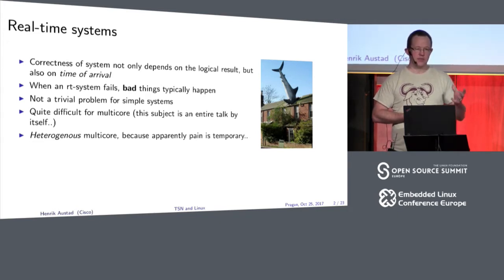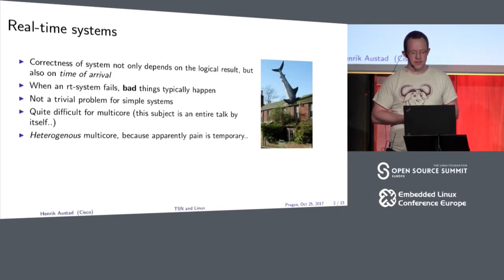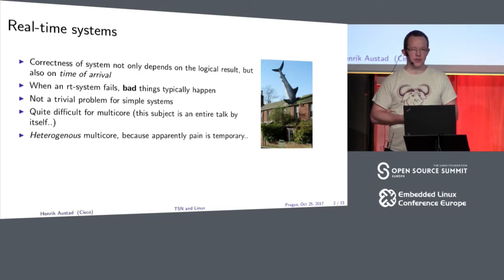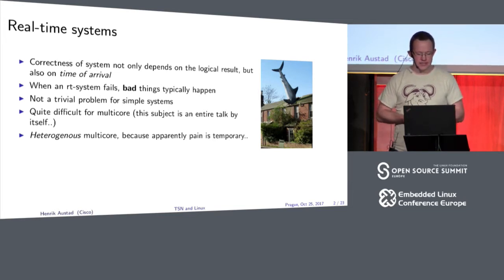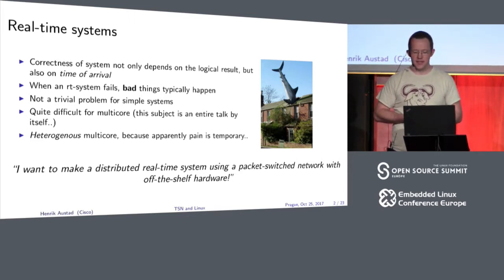We don't typically kill our users in our telepresence systems, but that's the extreme point of real-time systems, which is why you have strict requirements for the network. It means you need to certify your system to make sure you meet all real-time requirements. For simple single-core systems this is actually quite difficult — you need to take all small details into consideration: virtual memory, buffers, everything matters. Add more cores and it becomes increasingly more difficult. A multi-core real-time system is a conference topic in itself.